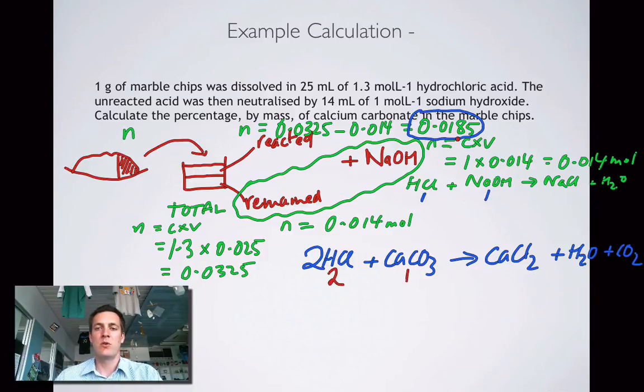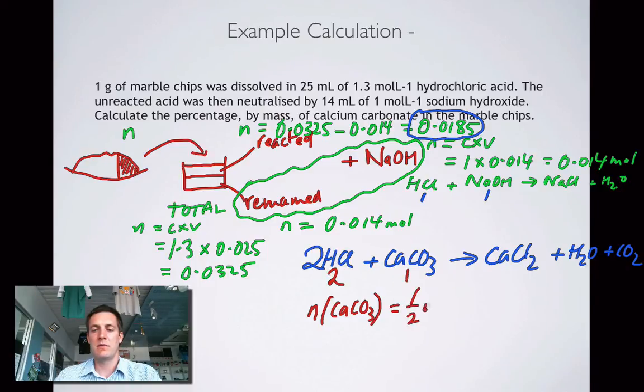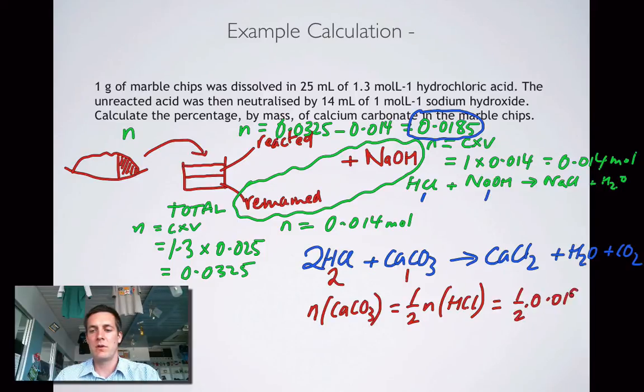Why is that good to know? Well, because I know how much hydrochloric acid reacted with the calcium carbonate. And now I can write an expression for the number of moles of calcium carbonate. And that equals half the number of moles of acid. I know the number of moles of acid was 0.0185. So that's a half of 0.0185. And that is 9.25 times 10 to the minus 3.